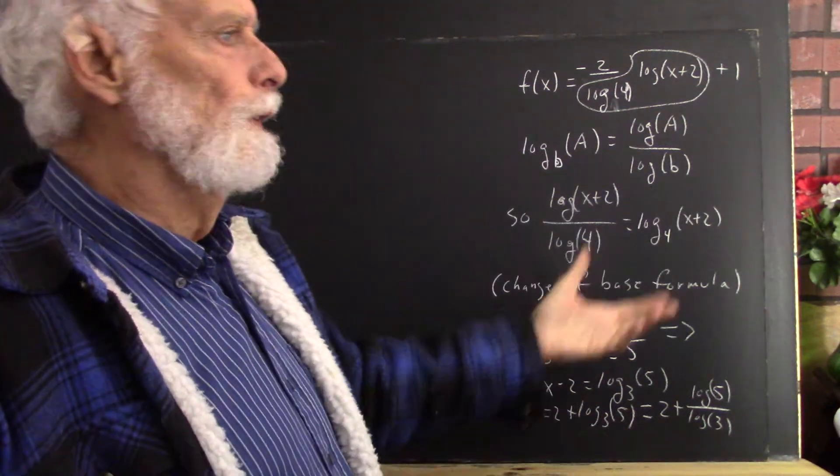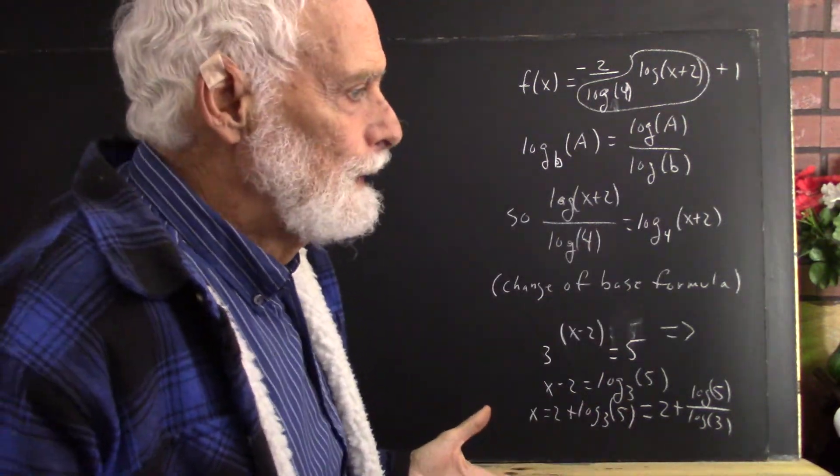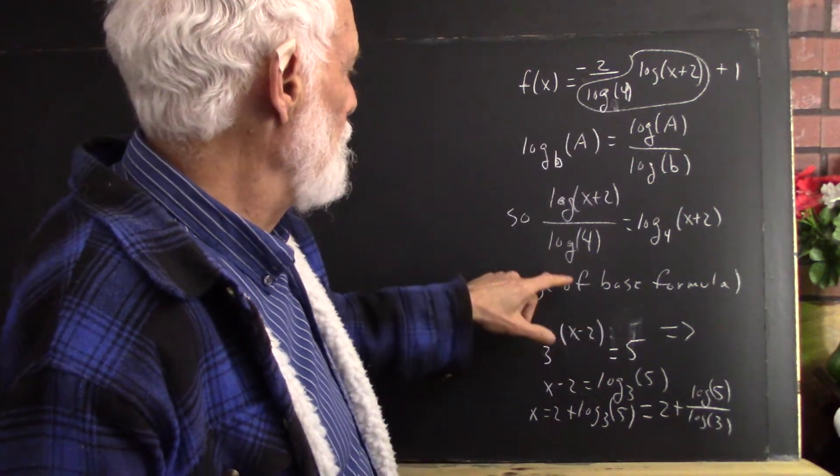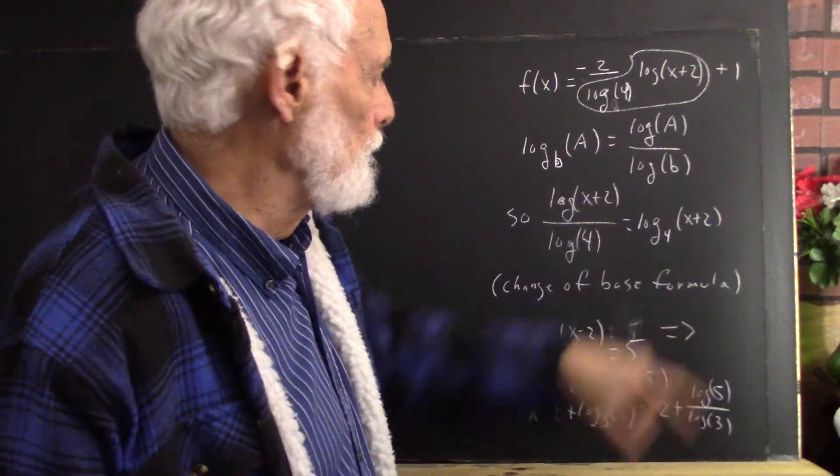Now this is simplification. This is example 5 in the text. And the question was, how do we get from this to a log base 4 of x plus 2?